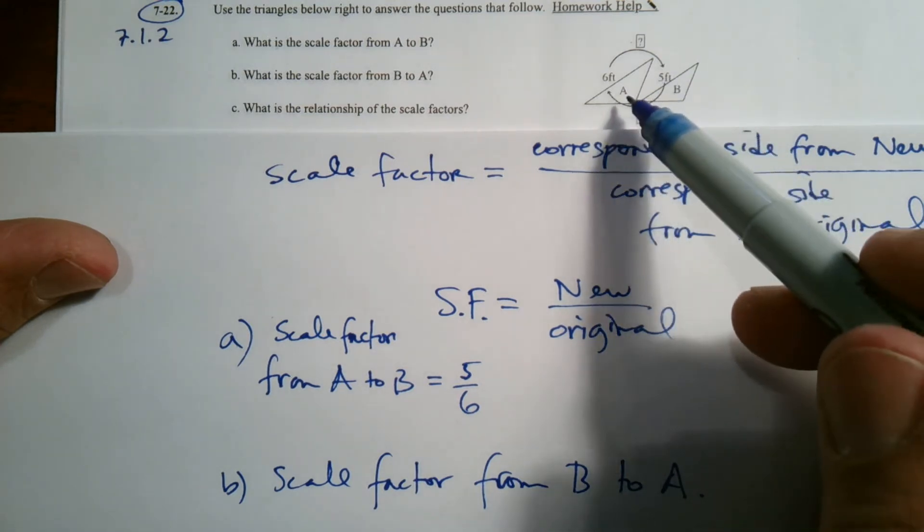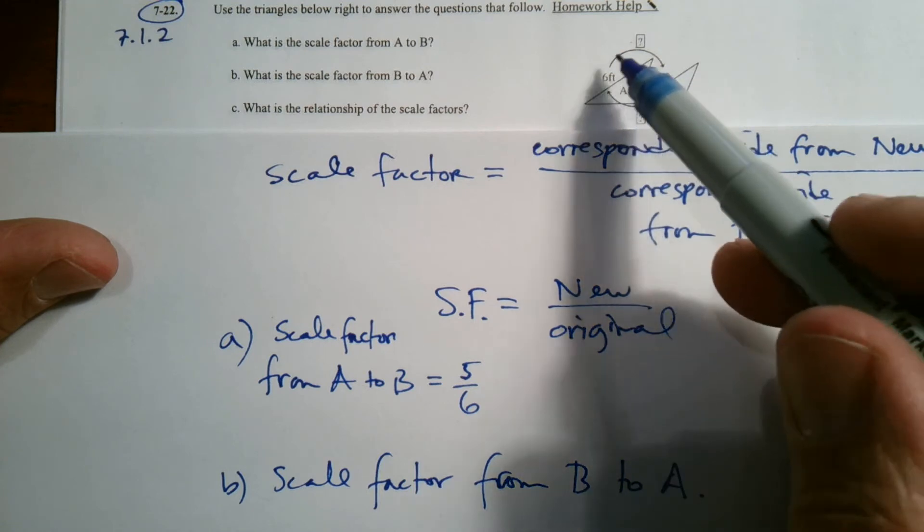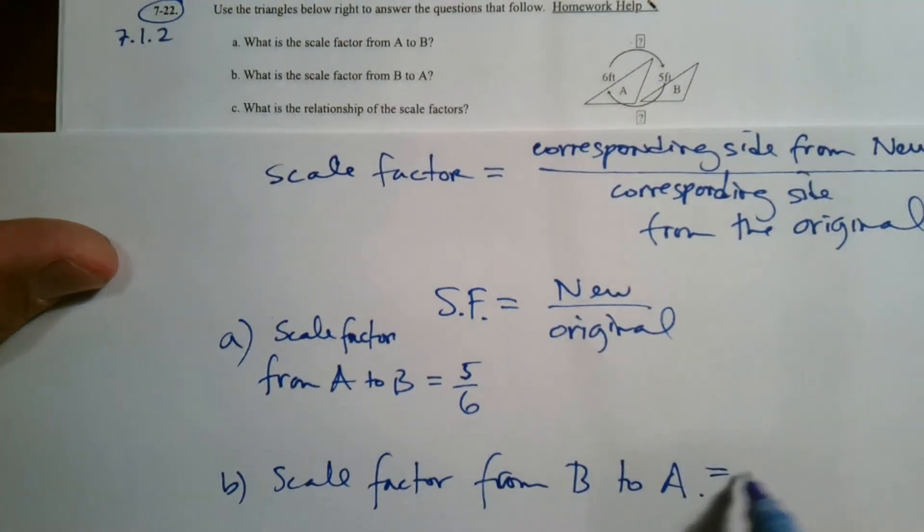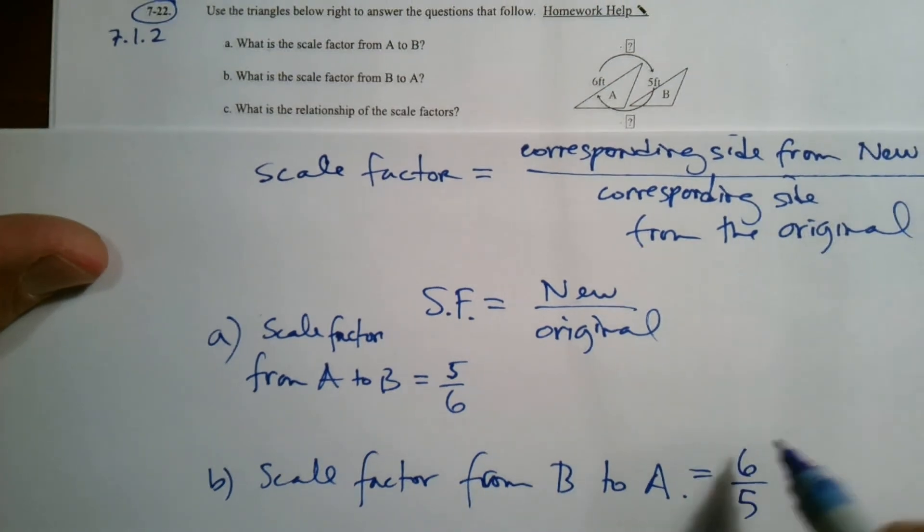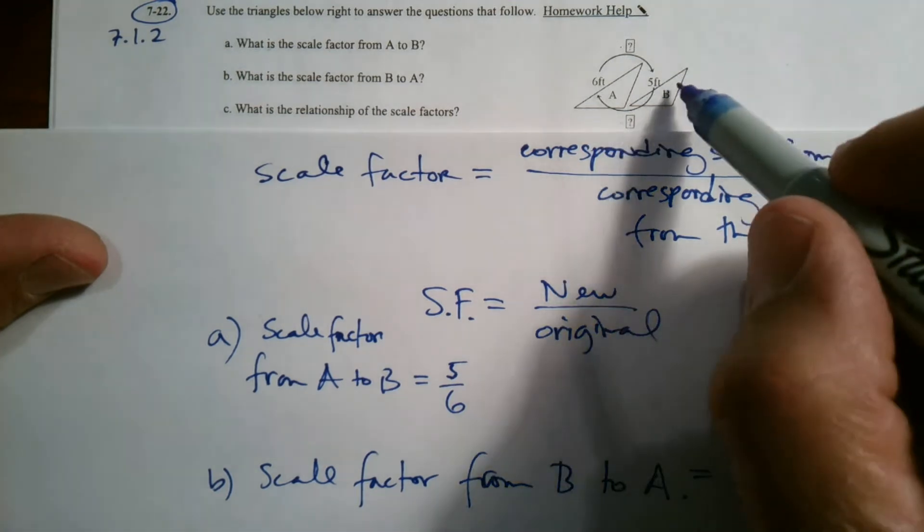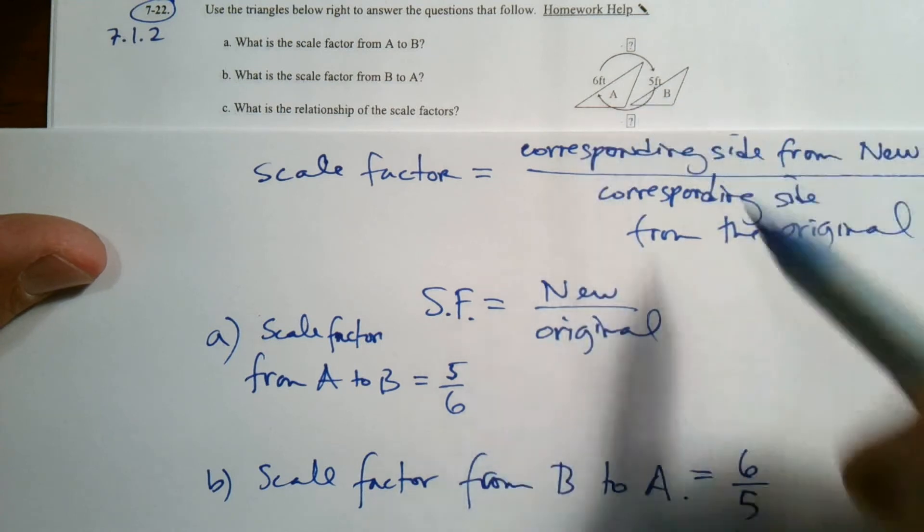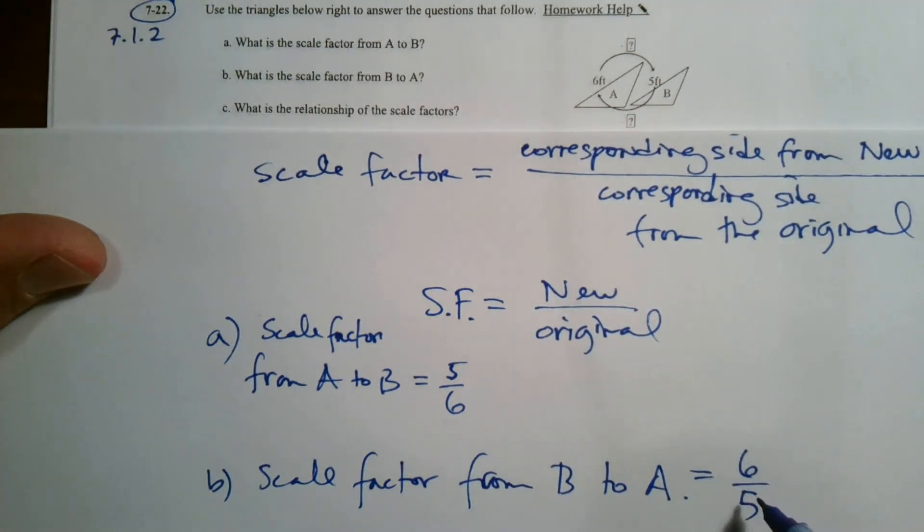That's going to be taking the new over the original. So it's going to be, in this case, six over five. We notice six over five is greater than one, which makes sense because I'm taking triangle B and it's growing from B to A. The scale factor has to be bigger than one.